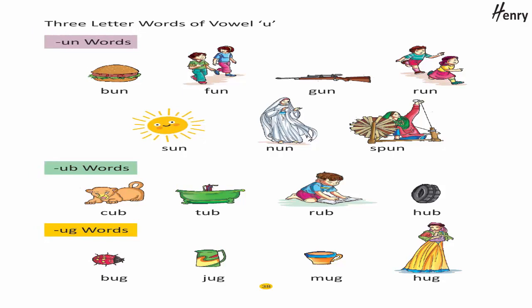Three-letter words of vowel U. -UN words: Bun, Fun, Gun, Run, Sun, Nun.